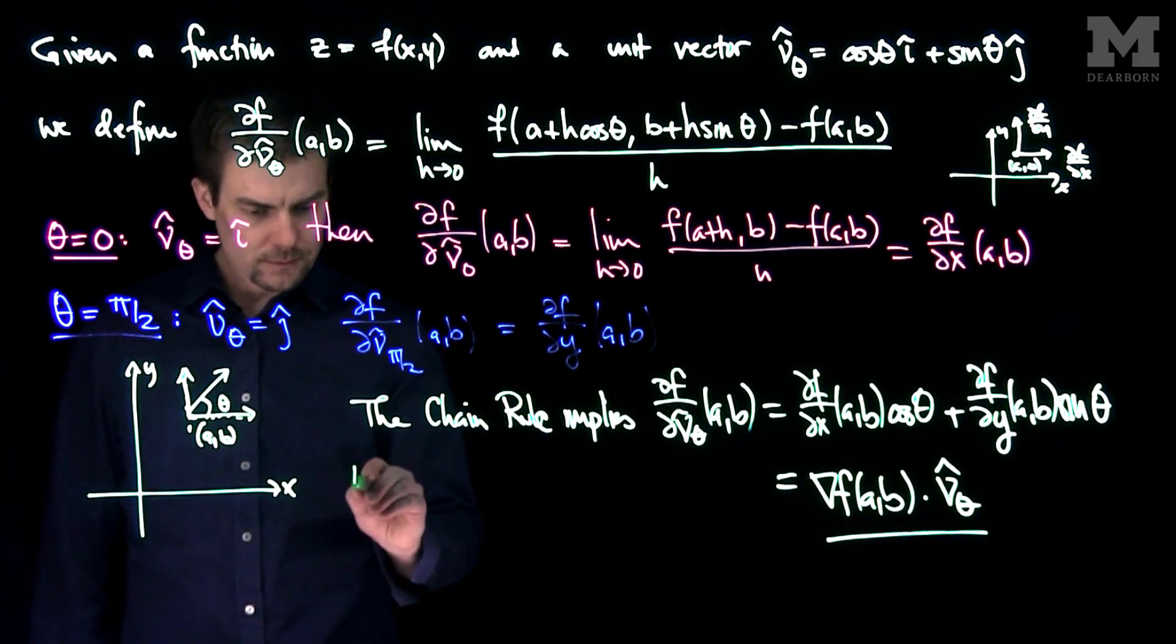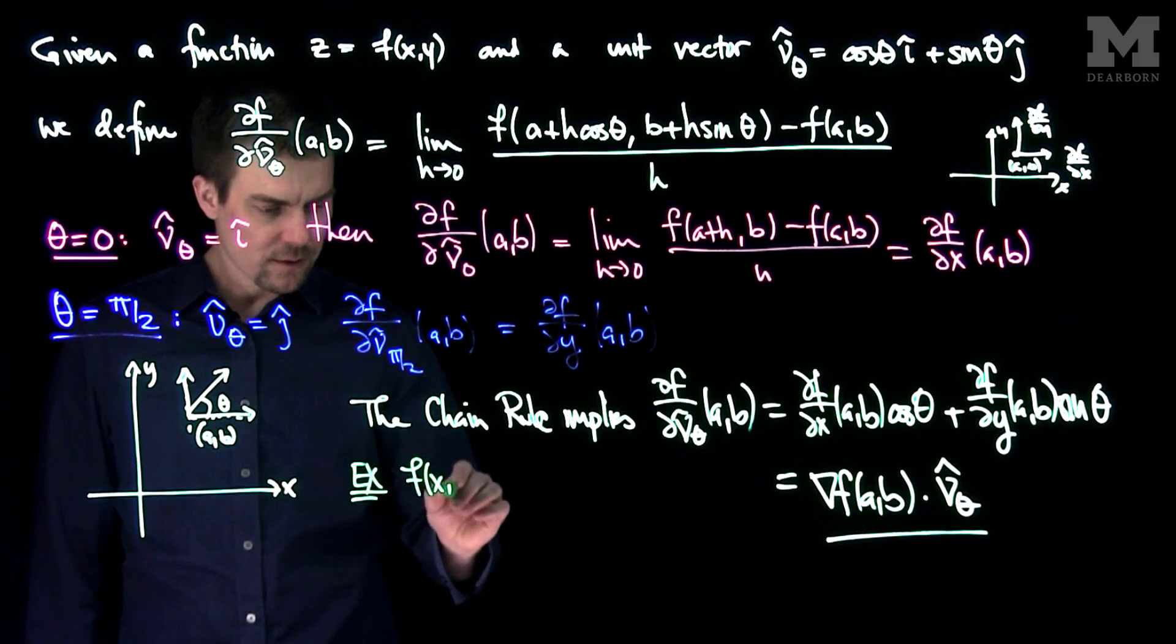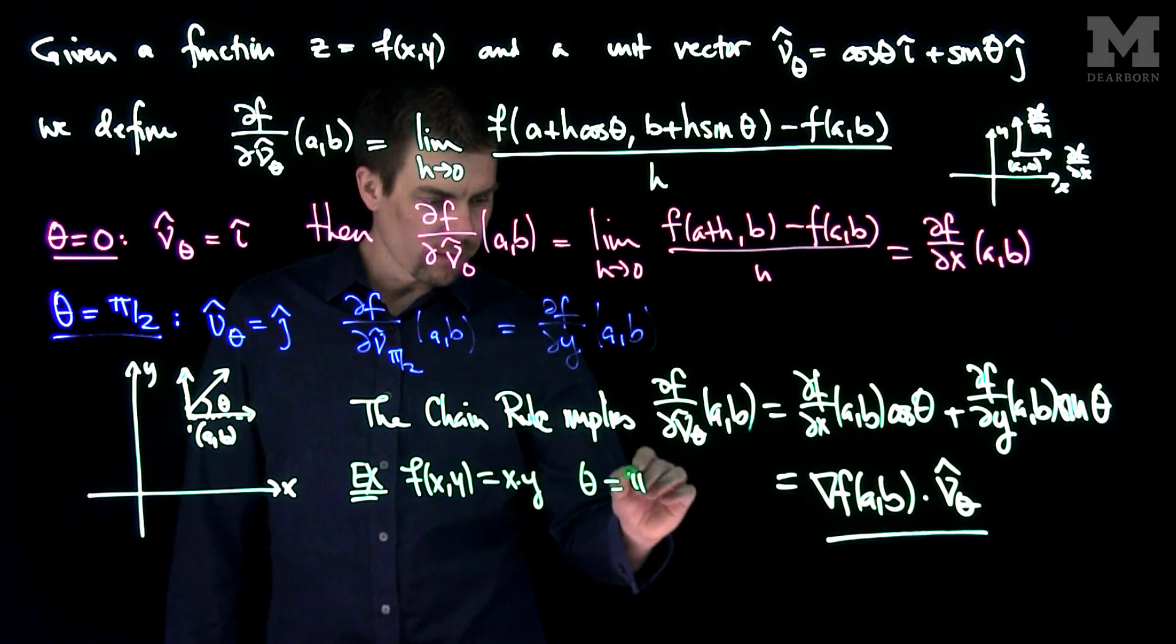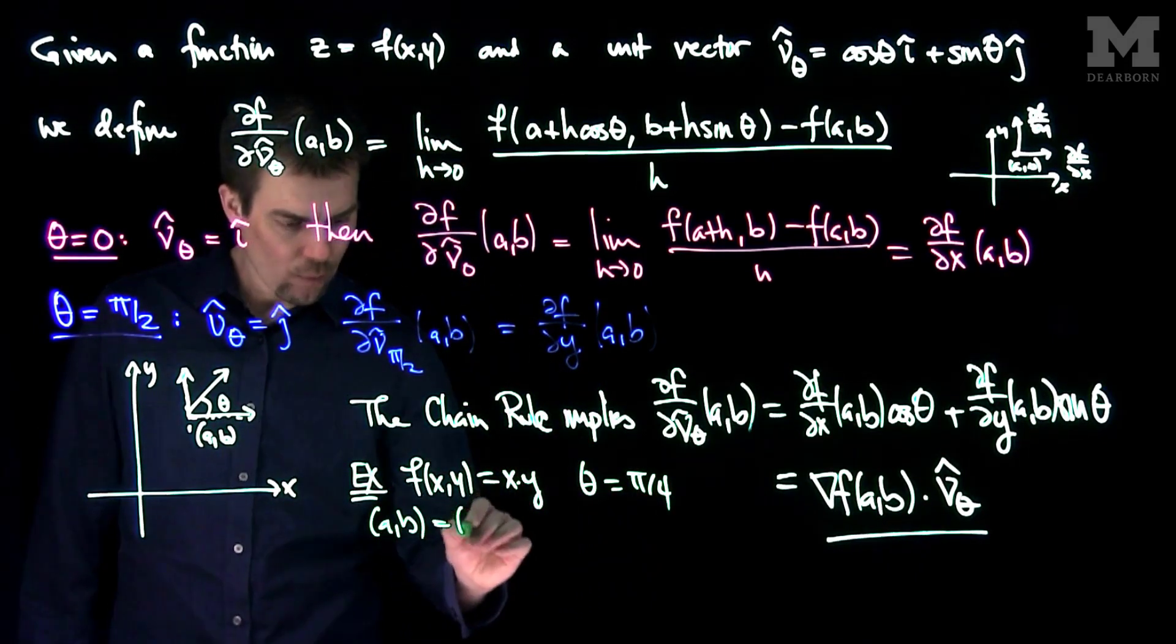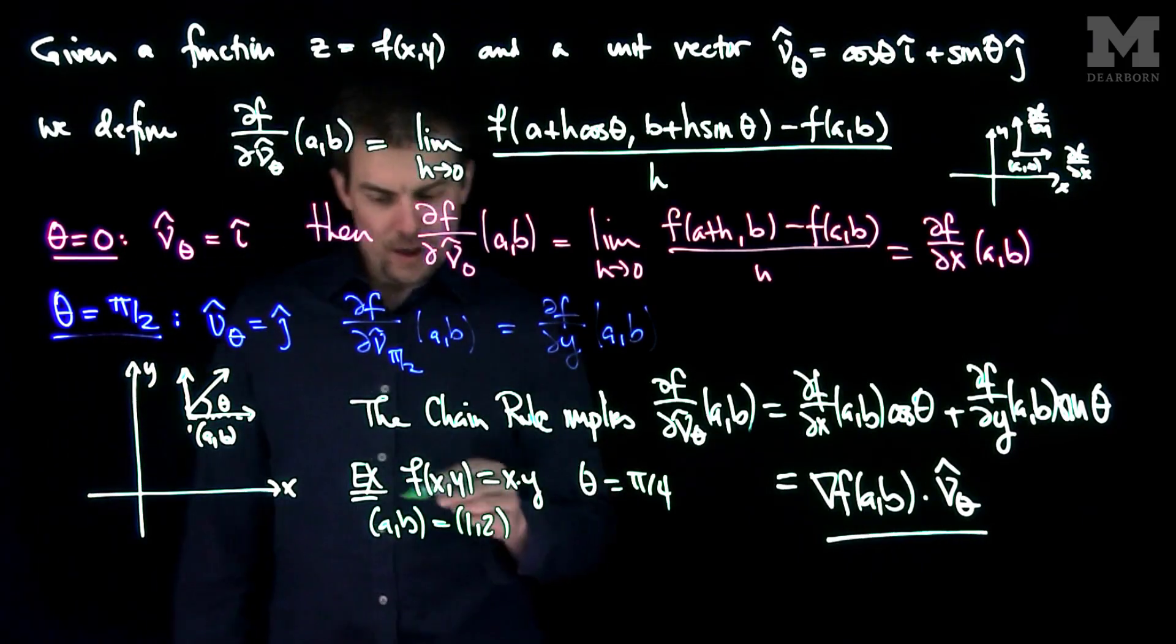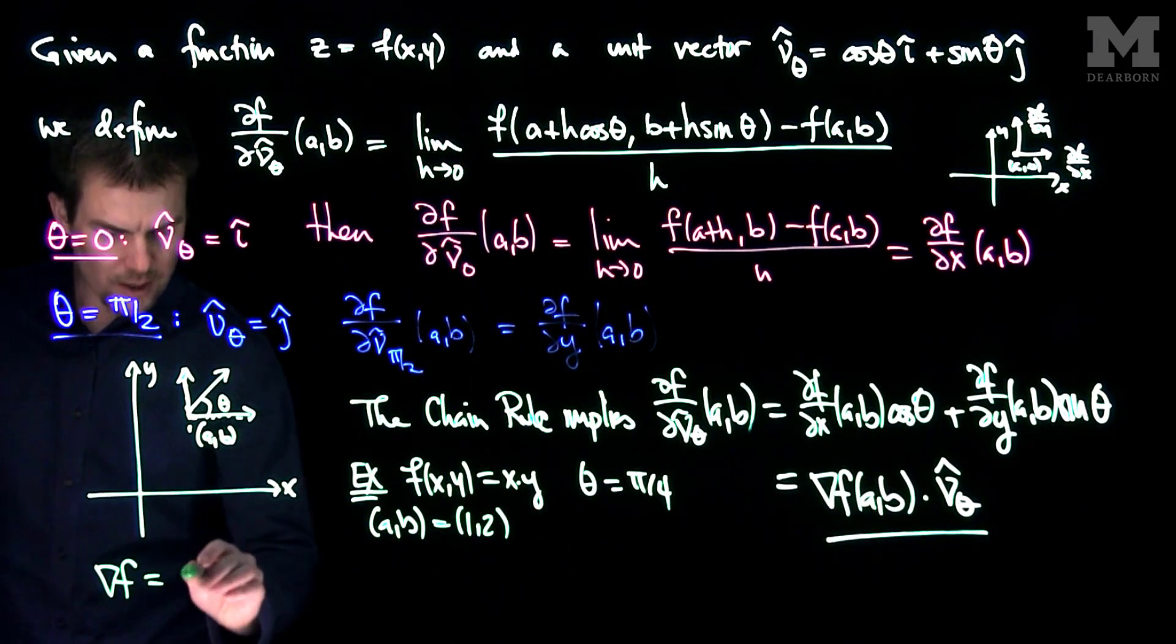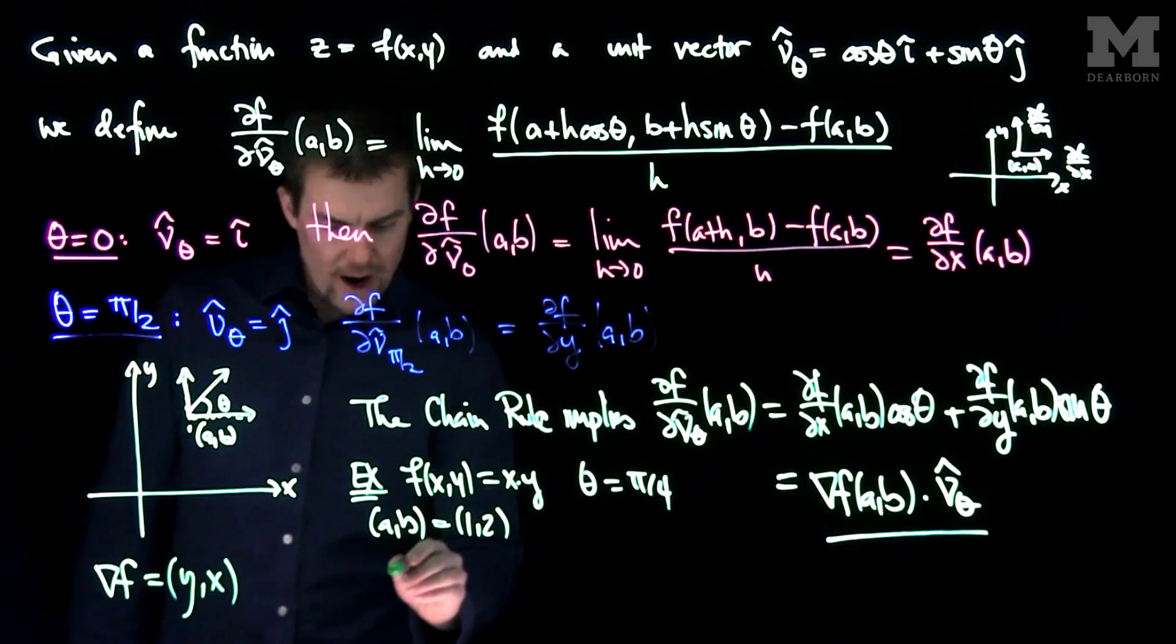So for example, if I looked at f of x, y which was x times y, and theta was pi over 4, and we pick the point ab to be 1, 2, we can compute the gradient of this vector, so the gradient of f will be y comma x.